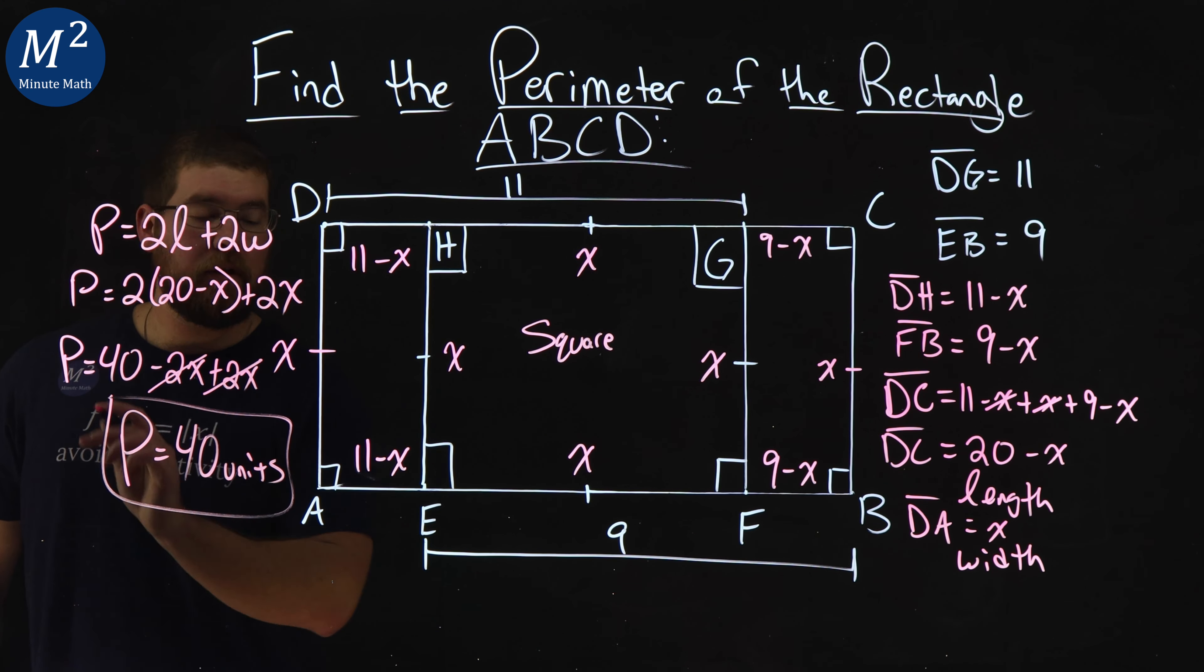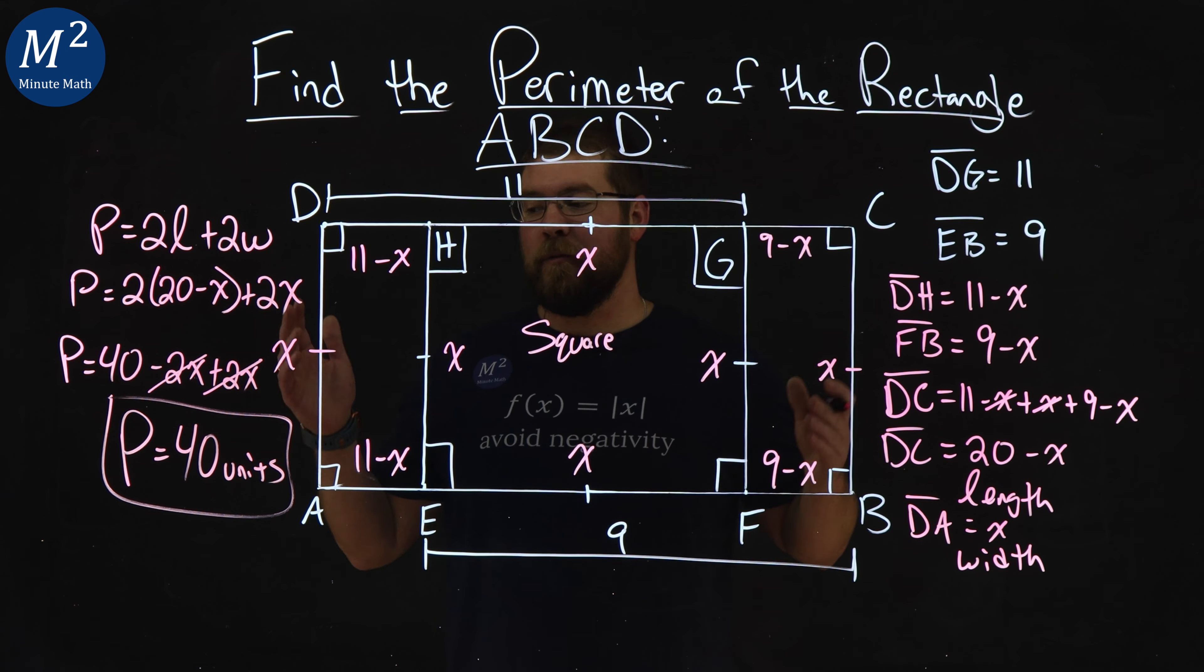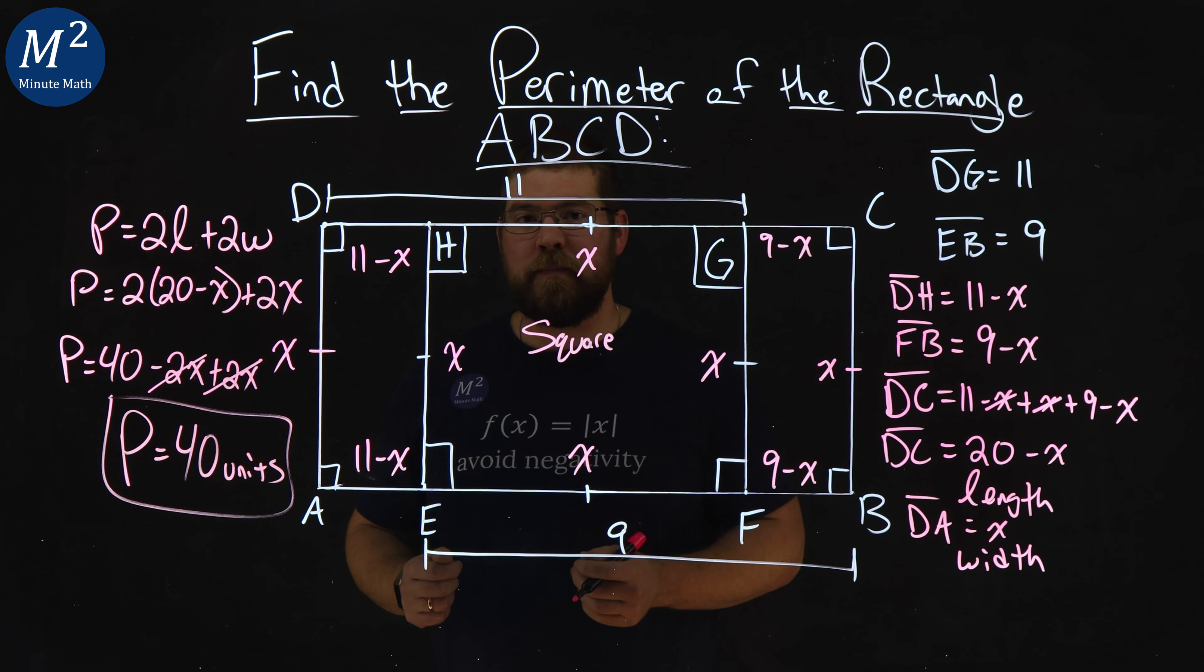And so, the perimeter of rectangle A, B, C, D, we found to be 20 units.